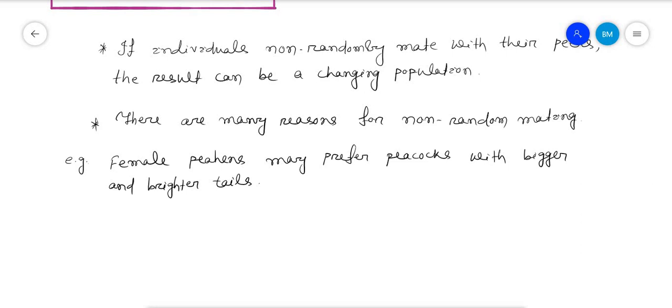One common form of mate choice is assortive mating.